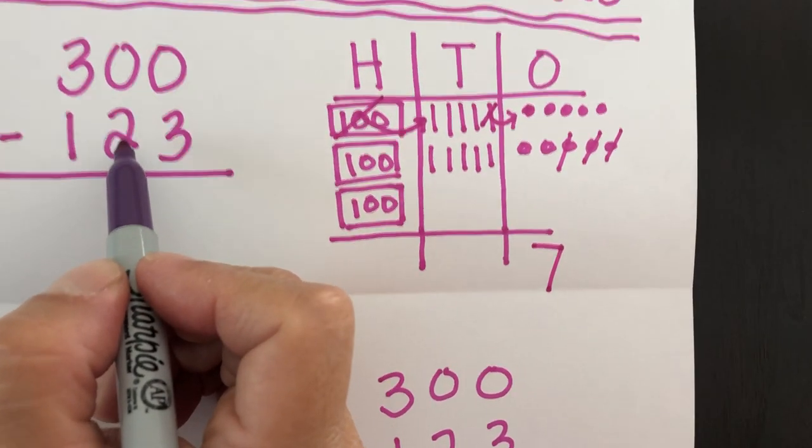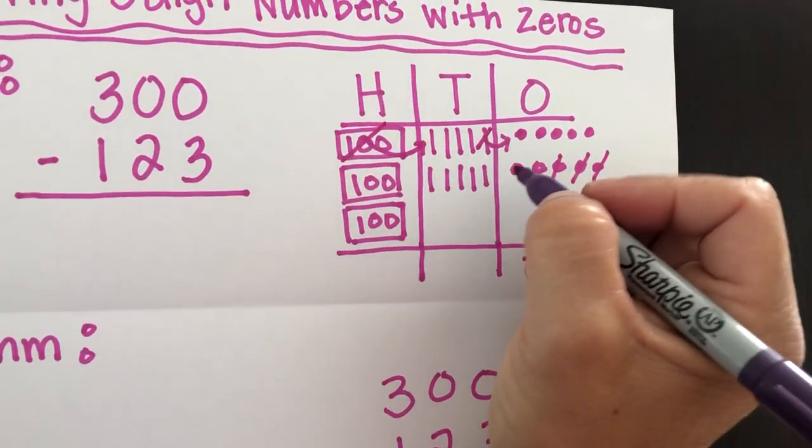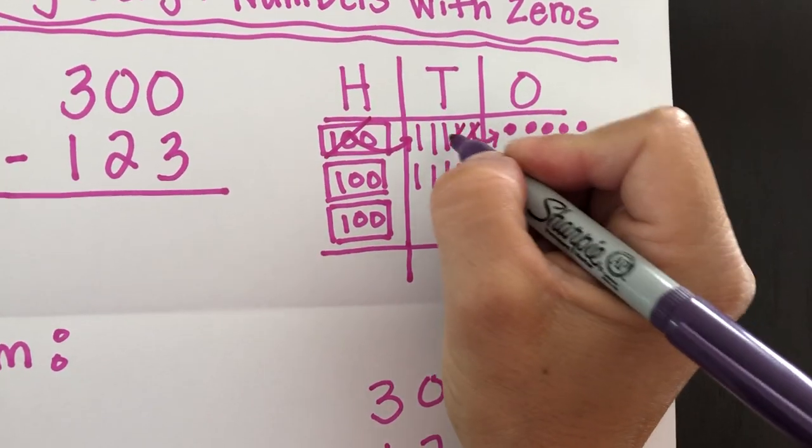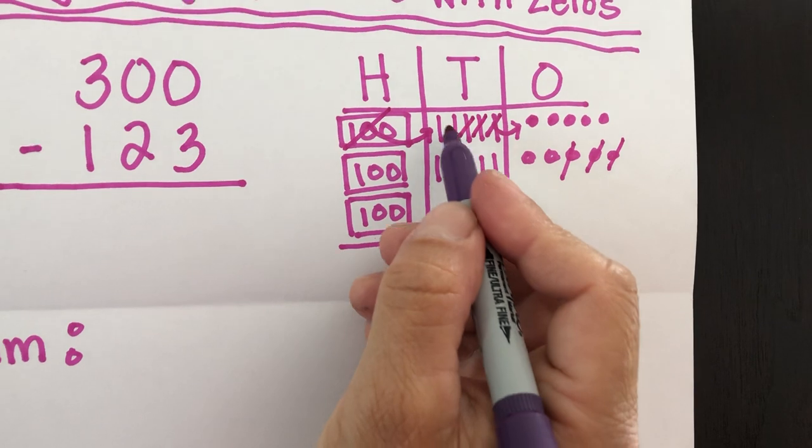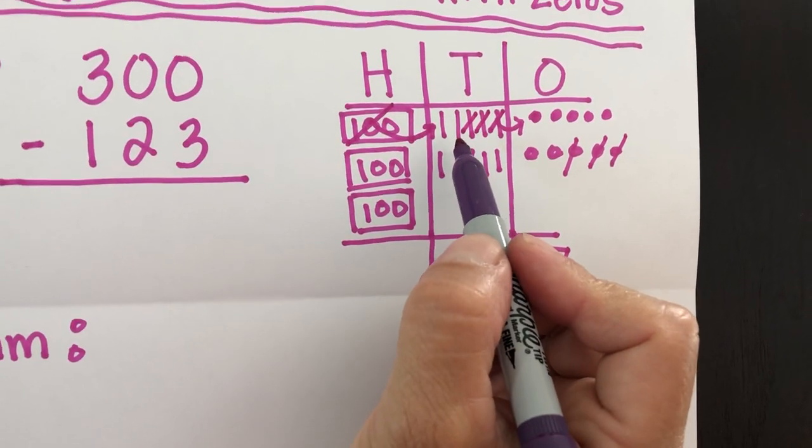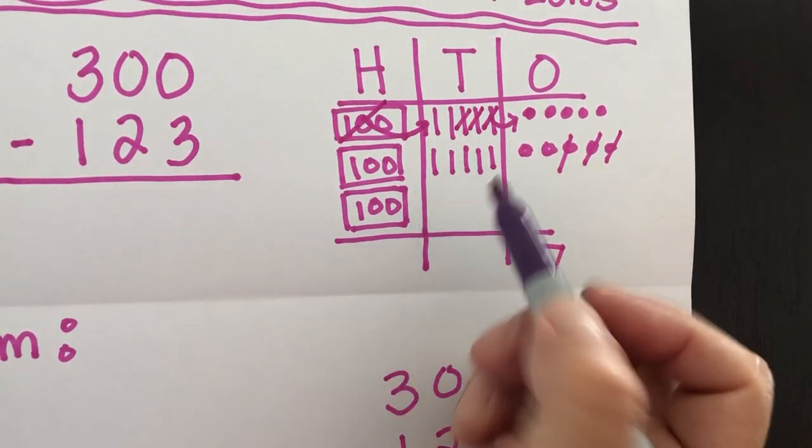Now in the tens column, it says to subtract two. So we're going to subtract two. So 1, 2. And now let's count the remaining tens. 1, 2, 3, 4, 5, 6, 7.